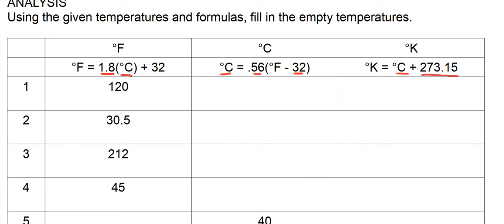First of all, you need to remember we're going to probably use some basic algebra, so you're going to have to rework the formula. For example, if you're only given Fahrenheit but you want to figure out Kelvin, if you work through it, you'll be able to figure out which way to go.